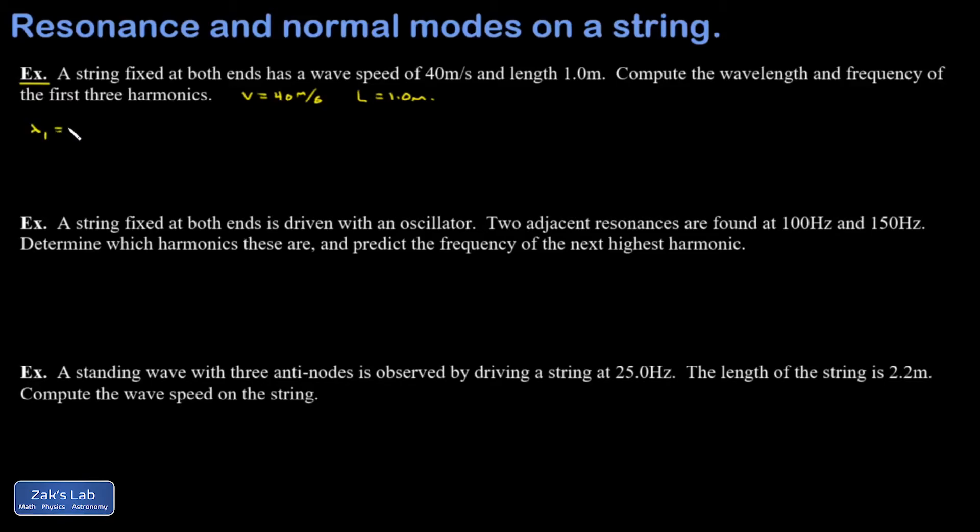Remember that lambda one, well, half of lambda one was equal to L. So lambda one was equal to two L, two times one meter or 2.0 meters. And then how do I get at the frequency here? I just use the wave speed equation again.